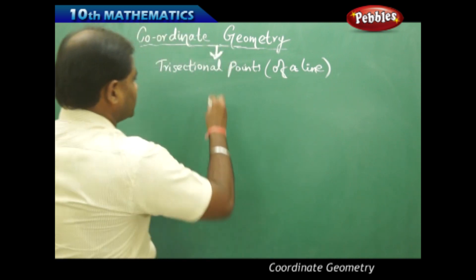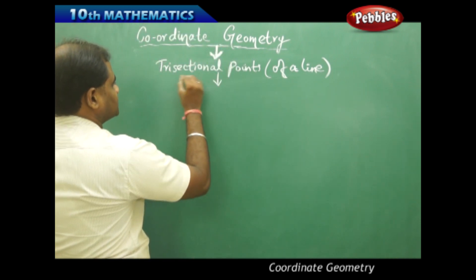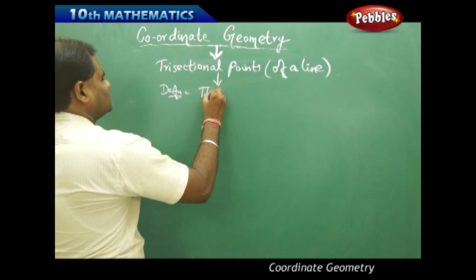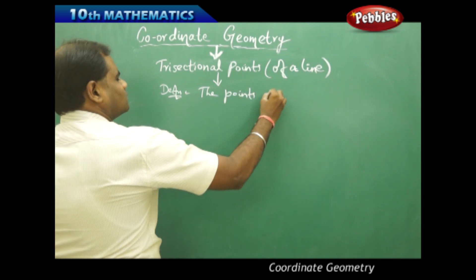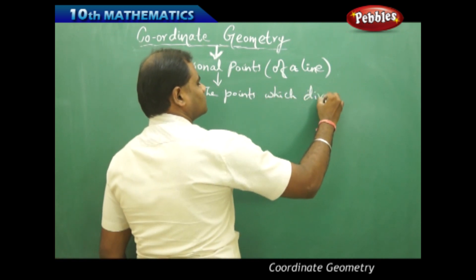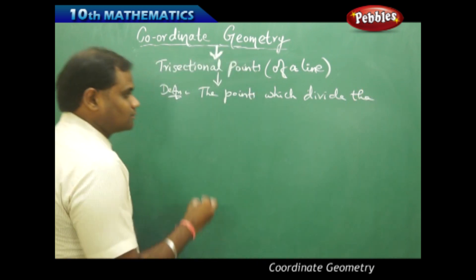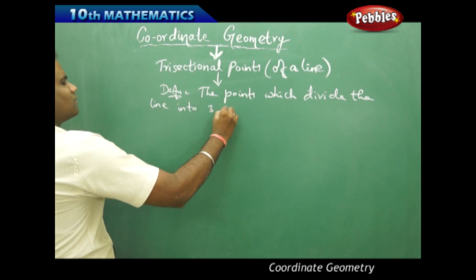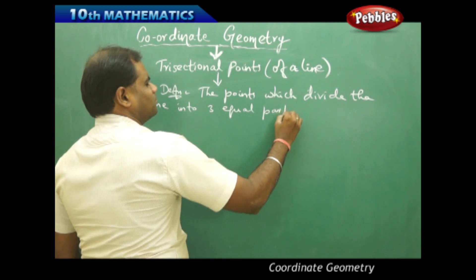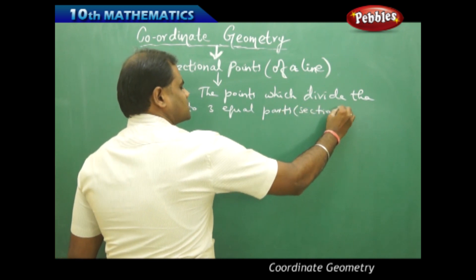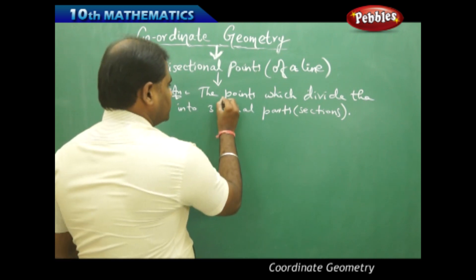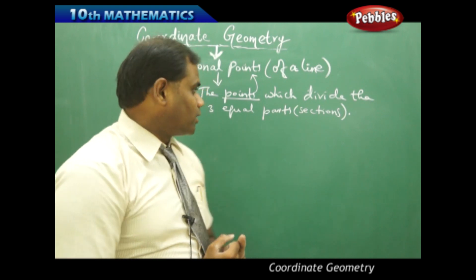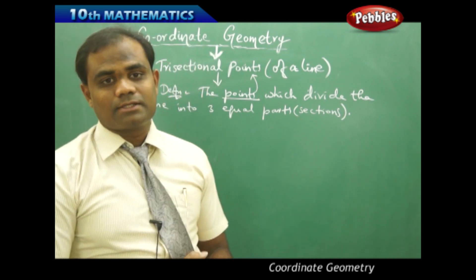Let's take the definition of trisectional points: the points which divide the line into three equal parts or sections are called the trisectional points. So trisectional points are the points which divide the given line into three equal parts or sections.